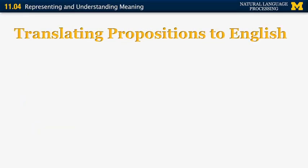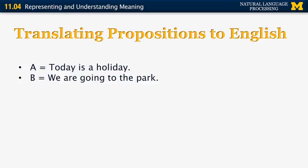So now let's see how we can translate propositions to English. Suppose that we have the following two propositions. A, today is a holiday. B, we are going to the park. What does A implies B mean? What about A and not B? What about not A implies B? And what about not B implies A? And finally, what about B implies A? Can you translate each of those into English sentences? Think about it and then I'll show you the answers on the next slide.